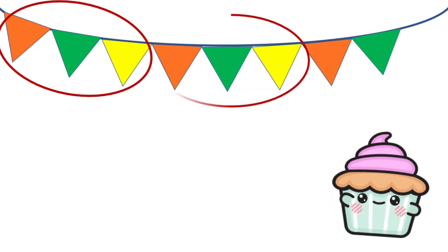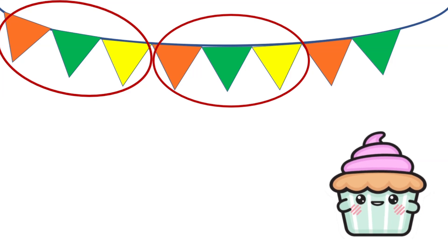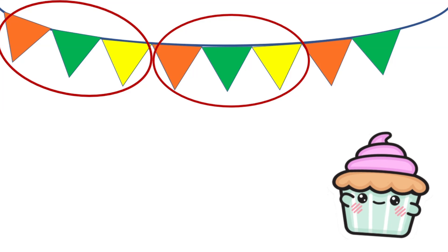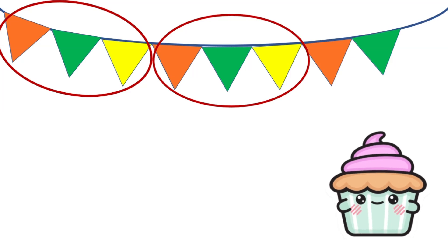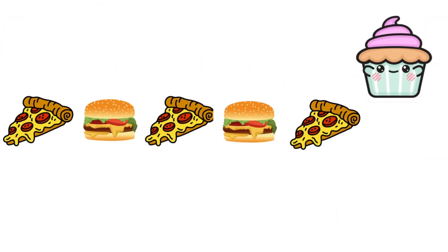Look at these decorative flags — they also make a pattern. The pattern is orange, green, yellow, then it repeats itself: orange, green, yellow. Now we have an orange and a green, so based on the pattern, the next color should be yellow. Yellow!